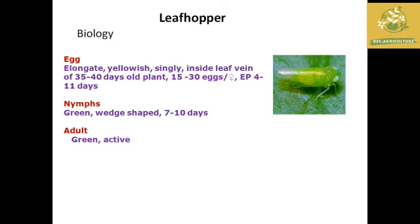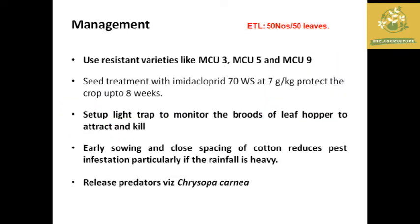The leaf hopper is small and long-shaped. The nymph is wedge-shaped and green in color. It is green and very active.